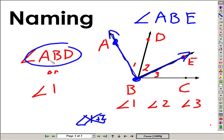So we have a three-letter system, we have a number system, and if there's only one angle at this particular corner, we could use a single letter as angle B.